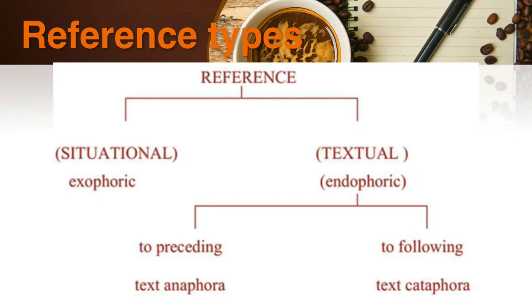Endophoric reference can also be classified into two types. The first is anaphora, which means looking to the preceding text. The second one is cataphora, which means looking to the following text.